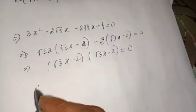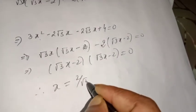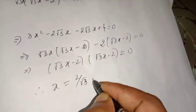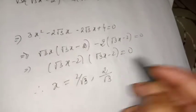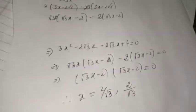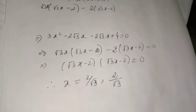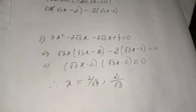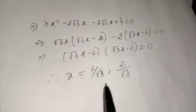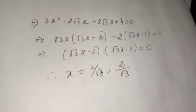Therefore x = 2/√3. Since we already found b²−4ac = 0, we get two equal real roots: both roots are x = 2/√3. This confirms the discriminant result — equal roots.